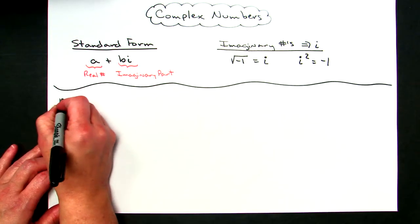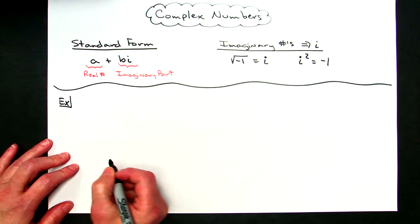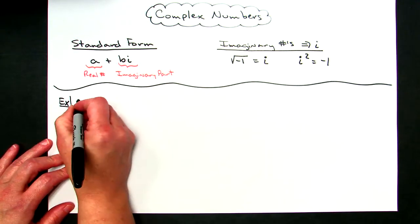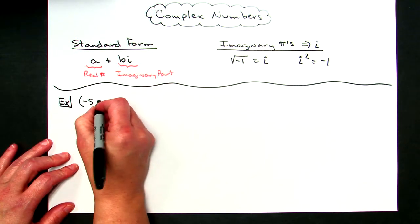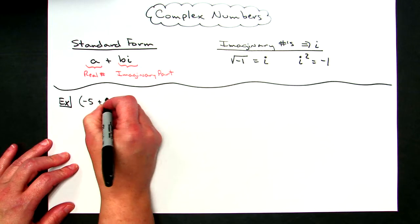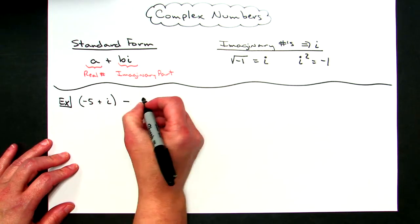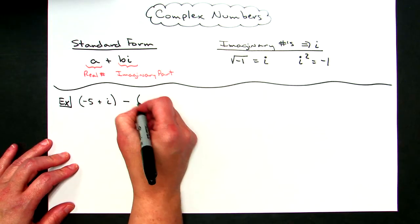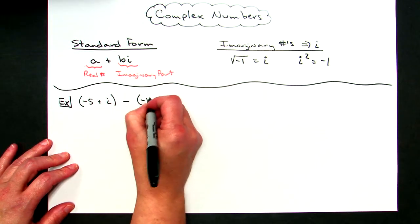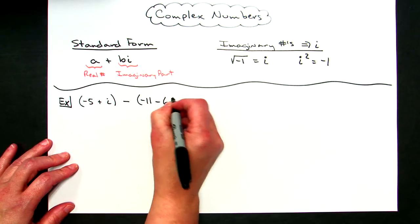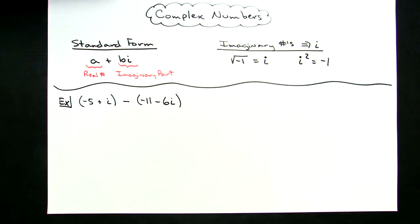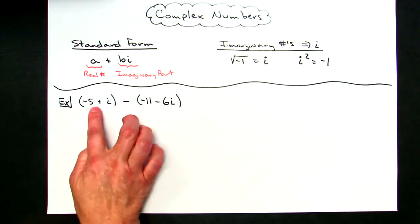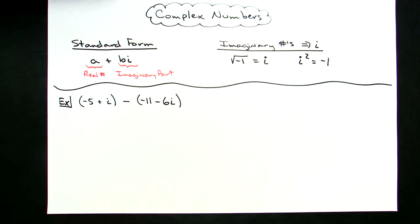You might have an example that looks like: the quantity negative 5 plus i, minus the quantity negative 11 minus 6i. This would be something along the lines of simplifying polynomials that include complex numbers.